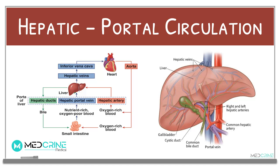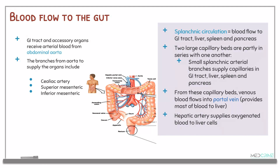Welcome to Medcry. Today we shall be covering the splanchnic circulation physiology. Let's have a look at the normal blood flow to the gastrointestinal tract. The gastrointestinal tract and its accessory organs usually receive their entire blood supply from the abdominal aorta. The branches of the aorta that supply these organs include the celiac artery, the superior mesenteric artery, and the inferior mesenteric artery. The blood flow to the gastrointestinal tract, liver, spleen, and pancreas is collectively known as the splanchnic circulation.